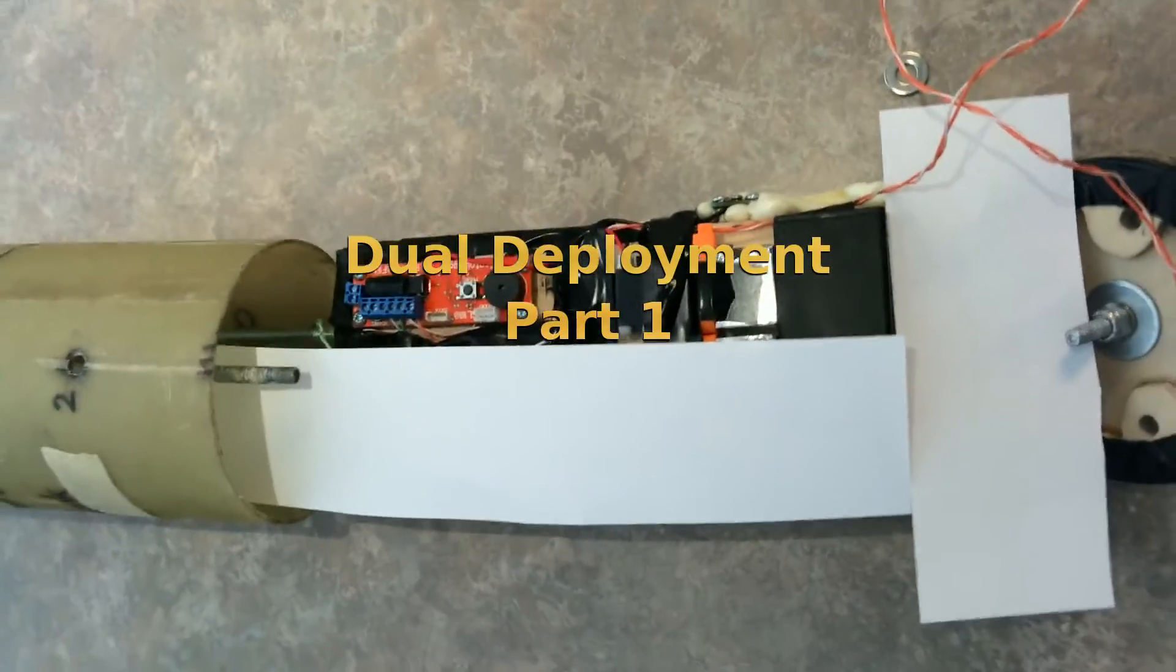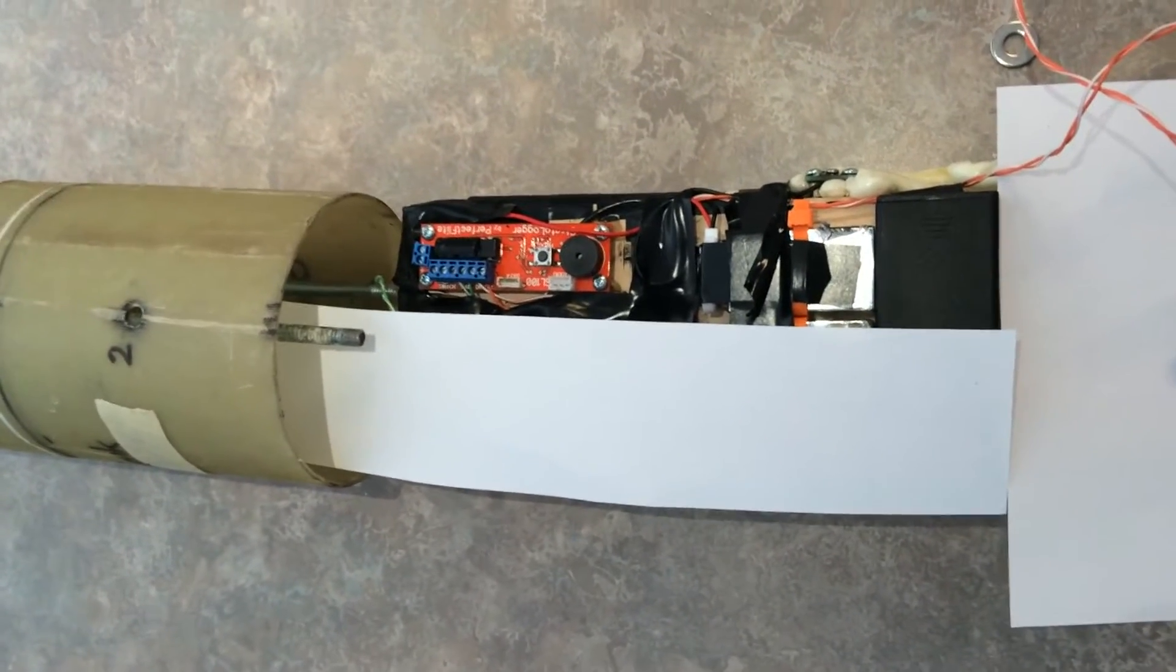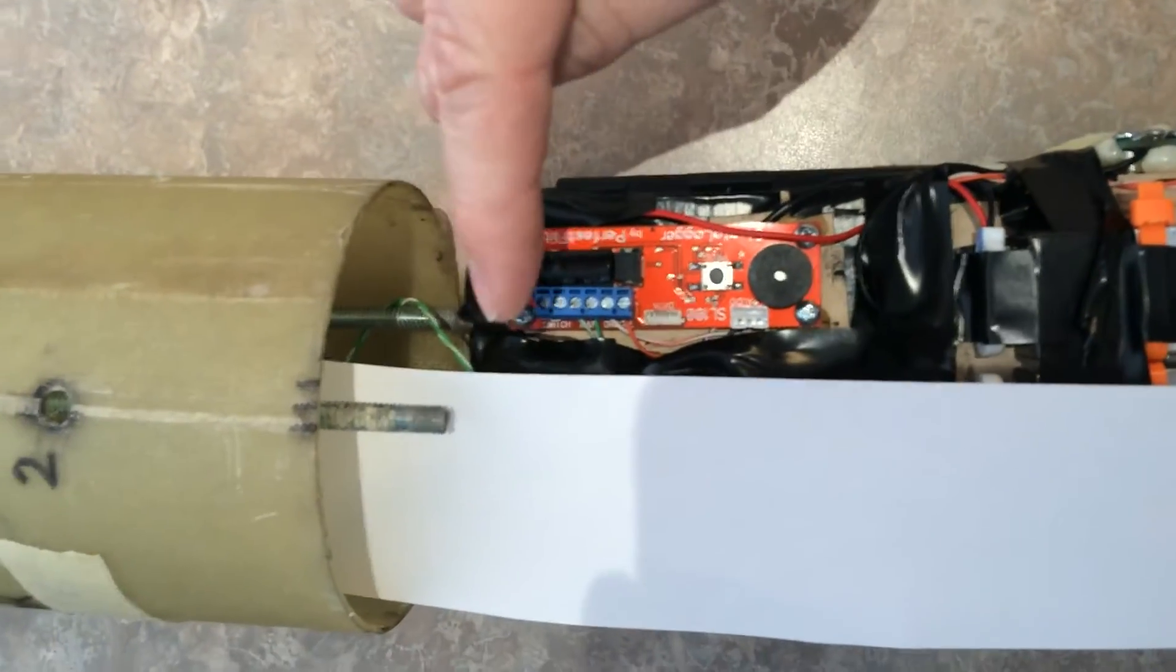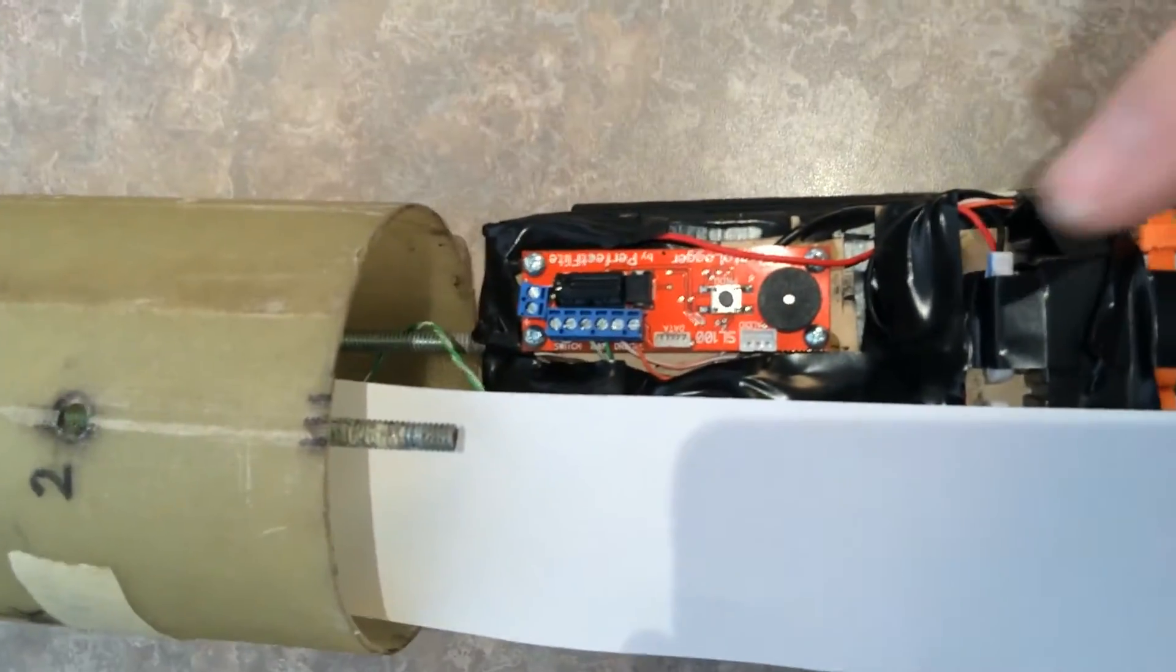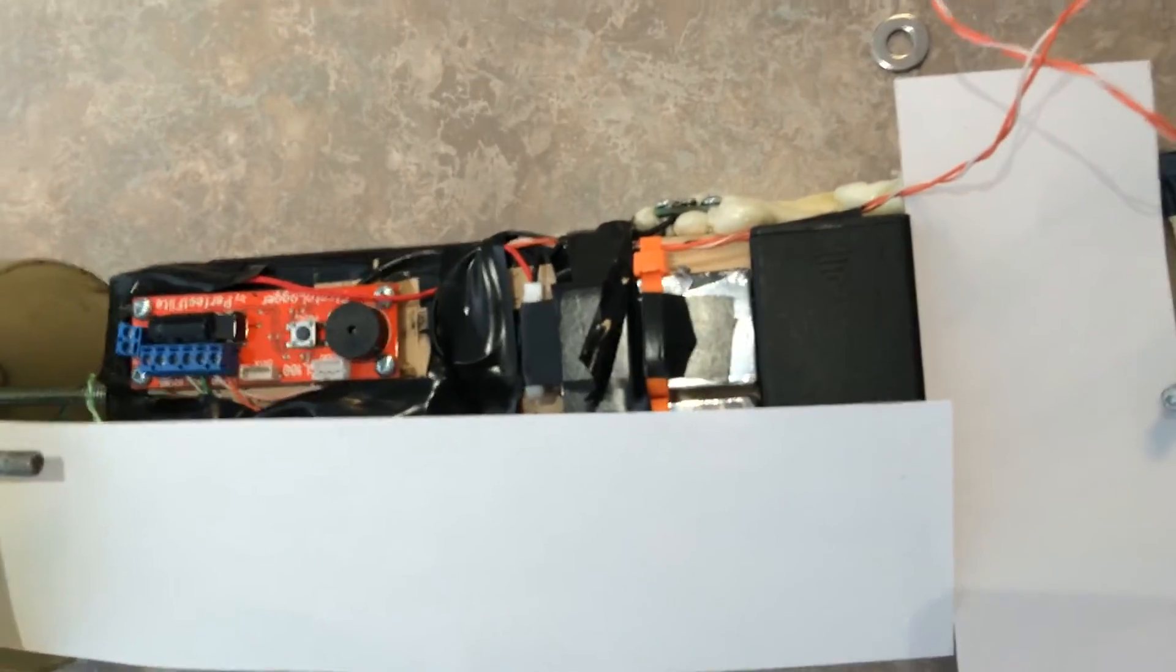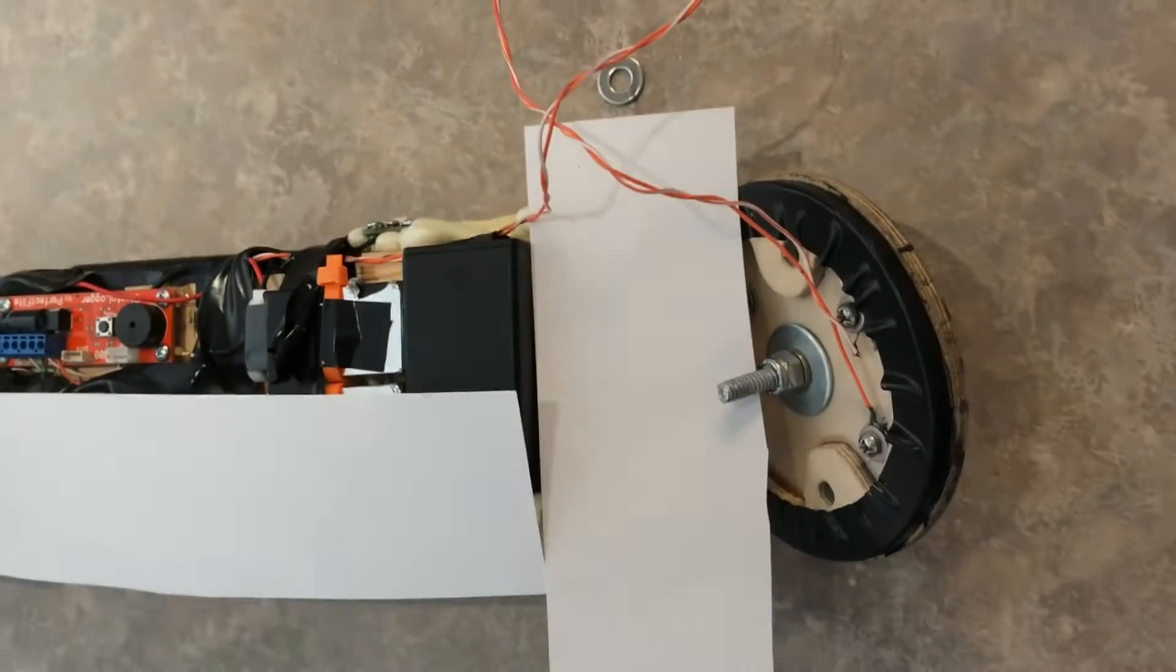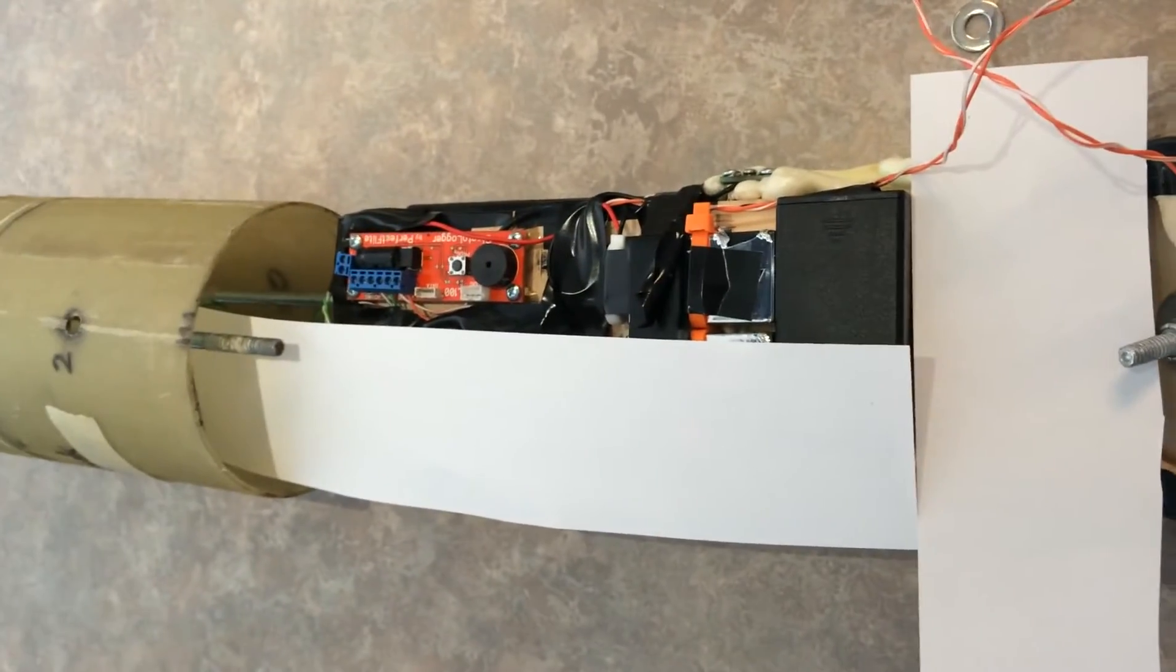I'm going over setting up dual deployment with an electronics bay using the Stratologger SL100. You can see the green wire coming up to the top of my electronics bay and the orange wire coming down through the bottom. The orange is my drogue chute below. The reason the drogue chute is on the lower side is good—I always use an ejection charge attached to the engine as a backup in case your electronics fail.